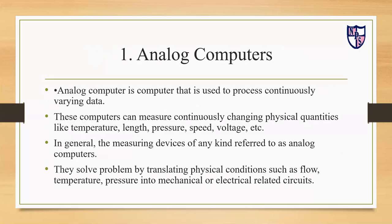Analog computers are used to process continuously varying data. These computers can measure continuously changing physical quantities like temperature, length, pressure, speed, voltage, etc. In general, any measuring device can be referred to as an analog computer. They solve problems by translating physical conditions such as flow, temperature, and pressure into mechanical or electrical circuits.